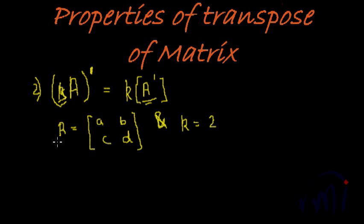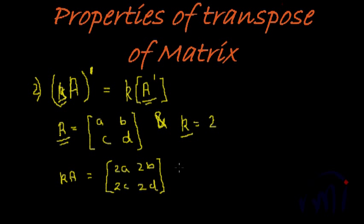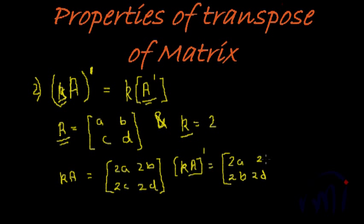Look at this matrix A, given by elements a, b, c, and d, and let the constant k equal 2. So k times A would be 2a, 2b, 2c, and 2d. Now the left-hand side is (kA)', which equals keeping the constant 2 the same — 2a and 2d remain on the diagonal — and flipping the non-diagonal elements, so 2b and 2c get swapped. This is (kA)' and it is nothing but 2 times the matrix with elements a, b, c, d transposed.